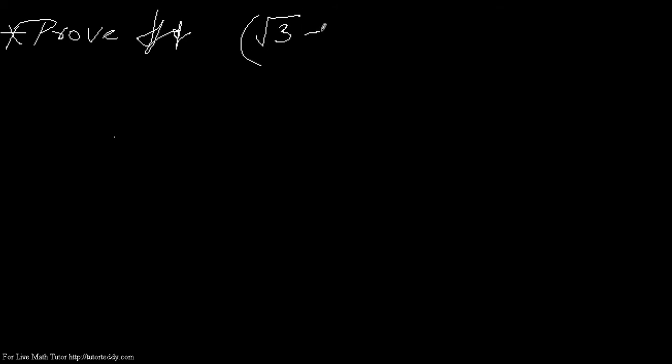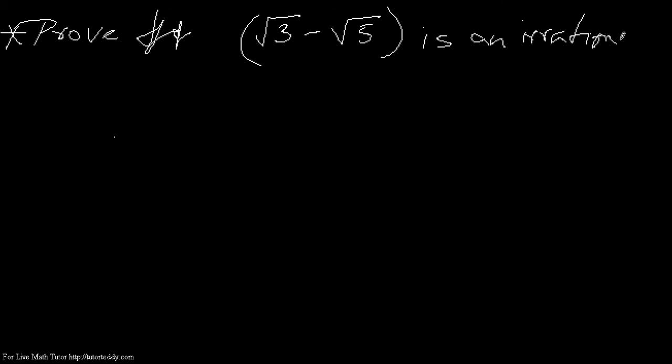Suppose we have a question where we need to prove that √3 minus √5 is an irrational number. Whenever we have this kind of proof where we have to show some number is irrational,